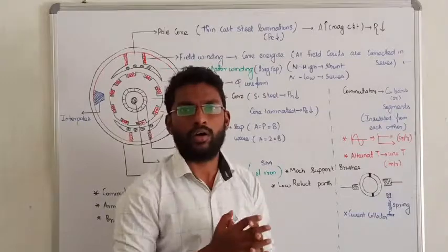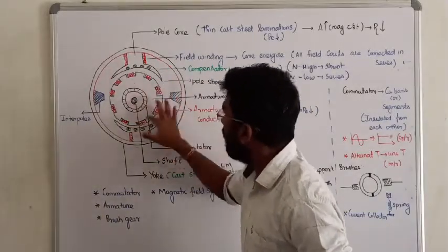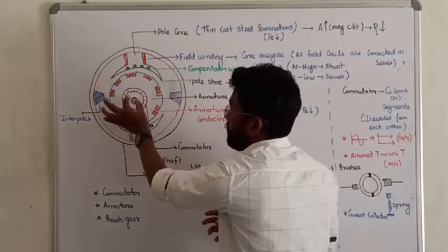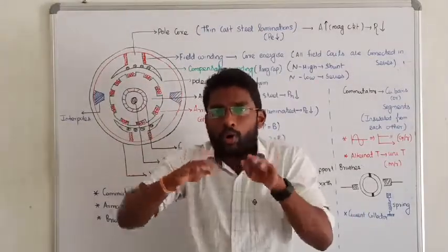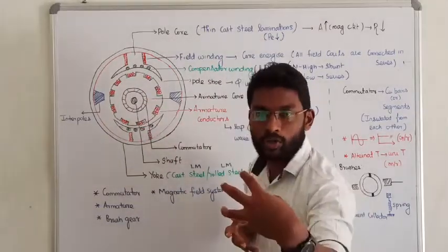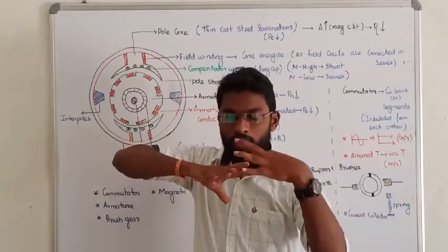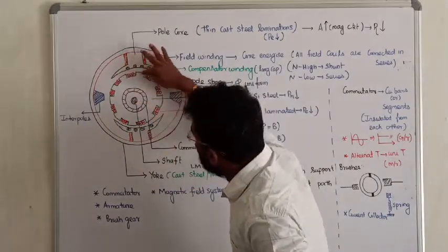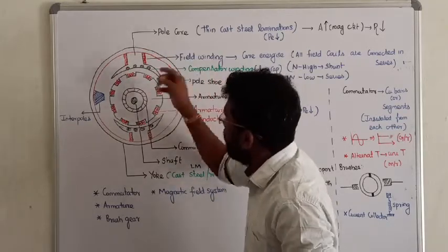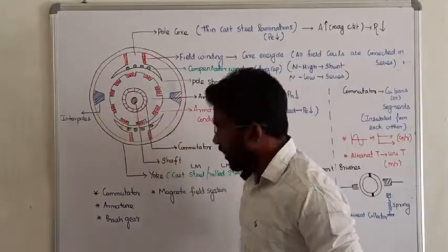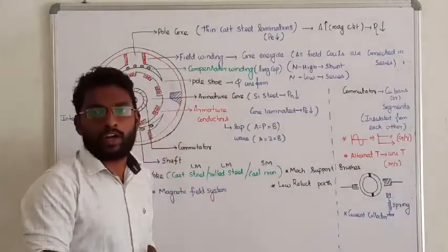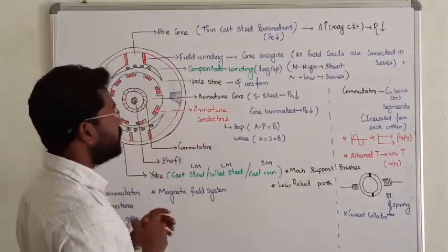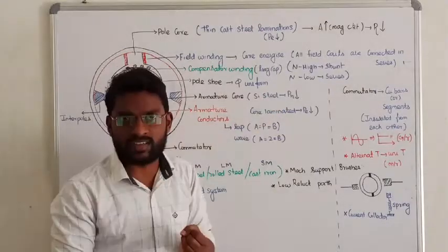Now this is the armature core. The armature core is mounted on the shaft — the cylinder is the shaft, and on the shaft we have the armature core. In the armature core, there are slots where the armature winding is placed. The armature core has two losses: one is called hysteresis losses and the other is called eddy current losses.